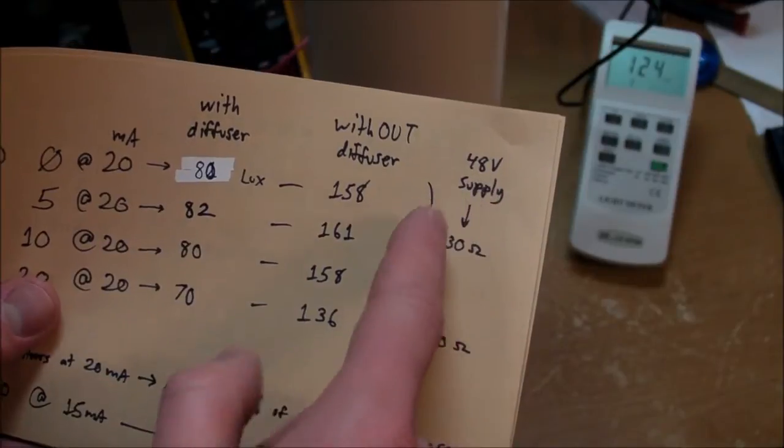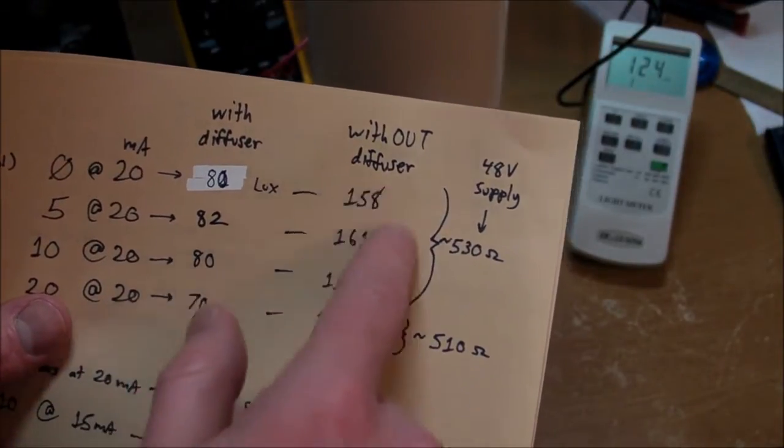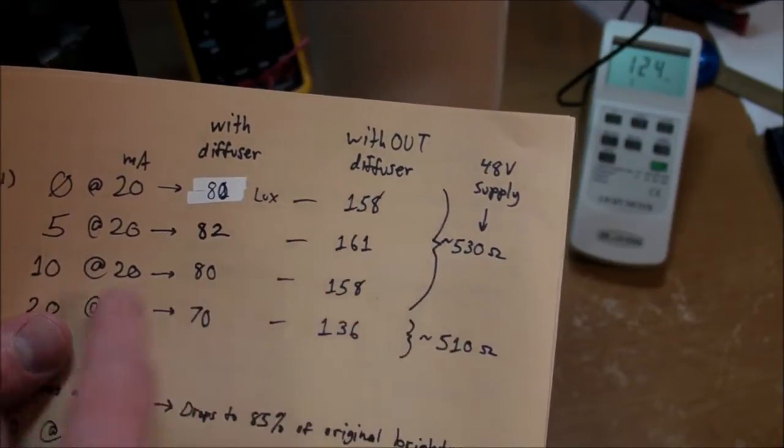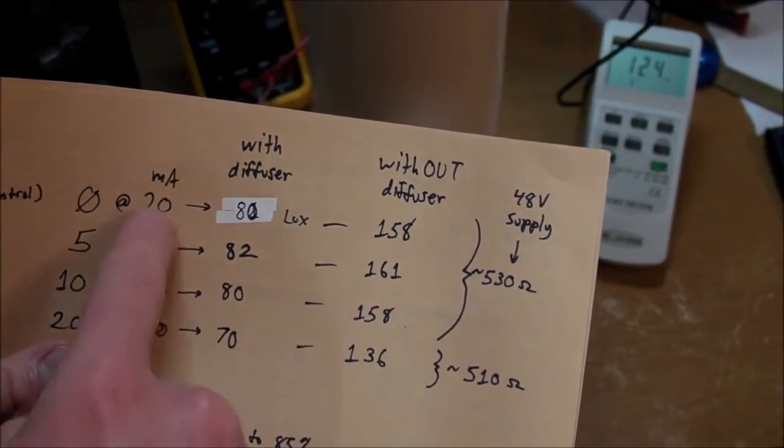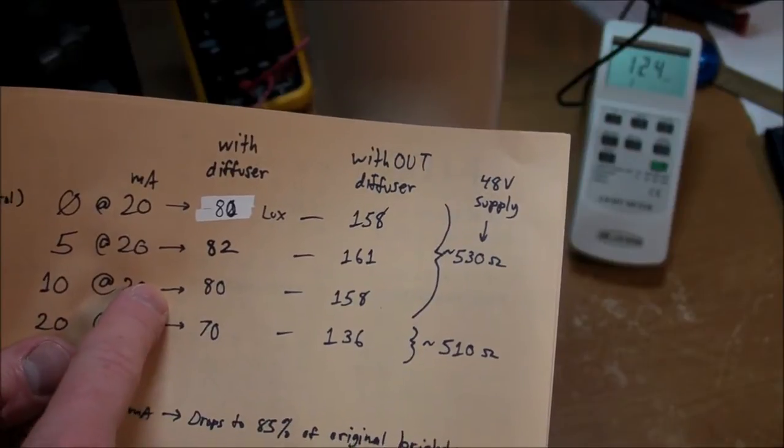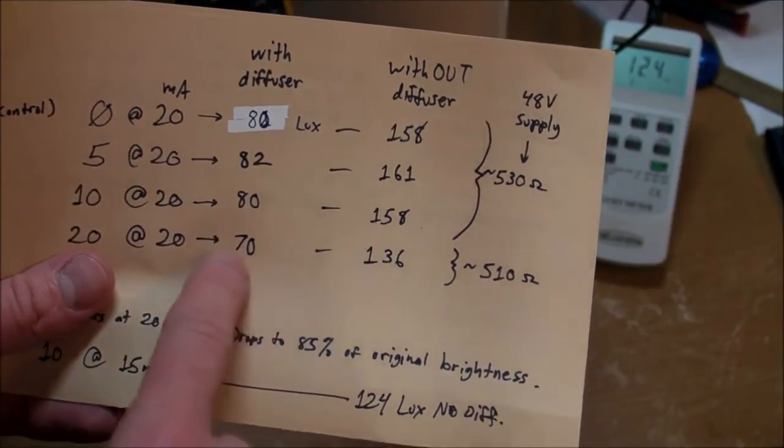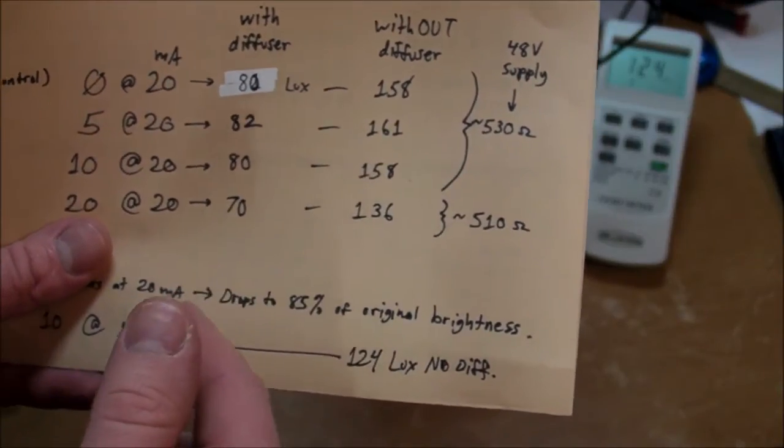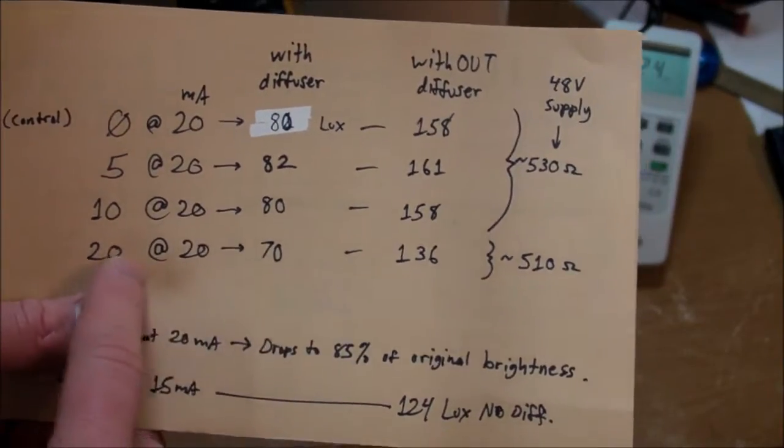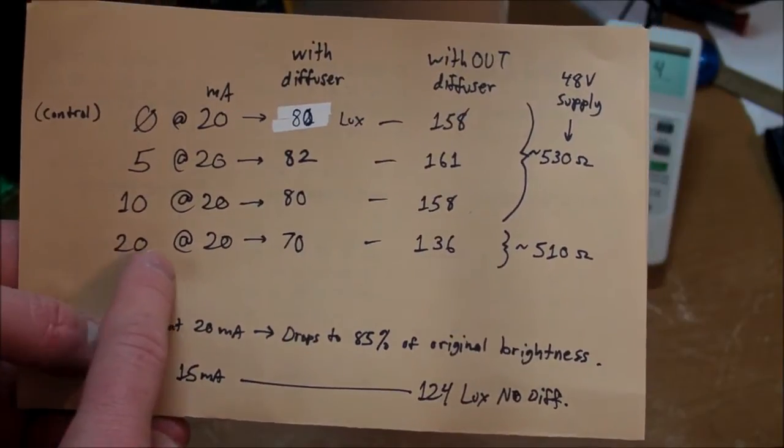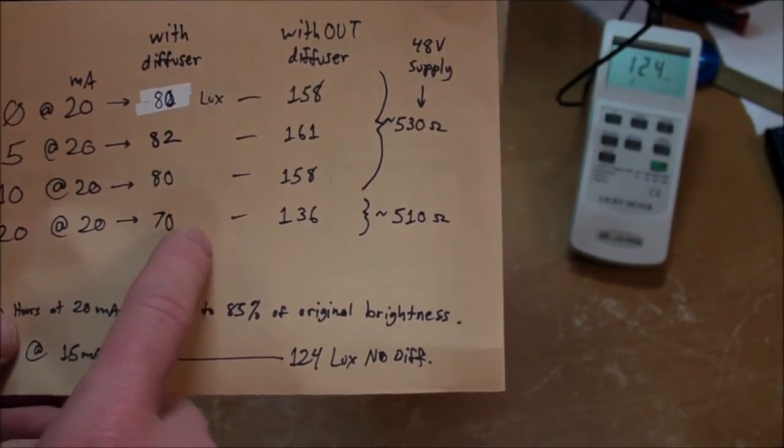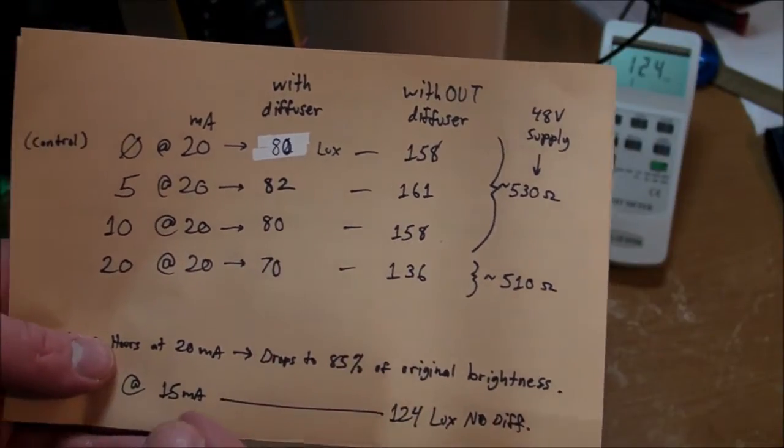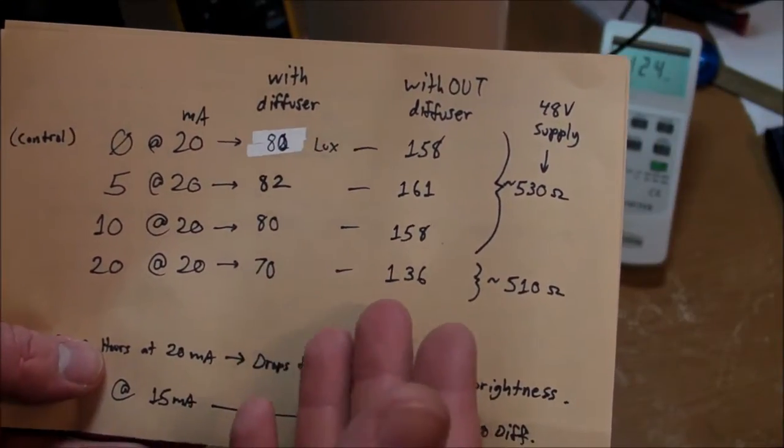With the 48 volt supply, for these three I needed about 530 ohms in series to get the 20 milliamps going through the LEDs. Although with this one I needed 510 ohms. Had to drop that resistance down a little bit. And that could be due to the fact that it was running at a relatively high current for such a long time that it just changed the electrical characteristics of the LEDs. And in order for them to be driven at 20 milliamps, they needed to be biased a little bit differently.